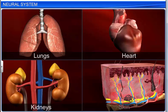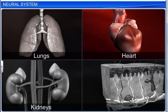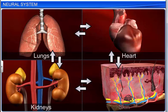This is an example of coordination and integration among organs such as the lungs, heart, kidneys, and skin that maintains homeostasis.